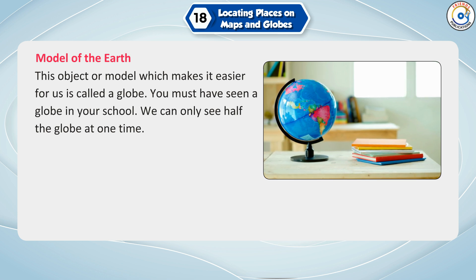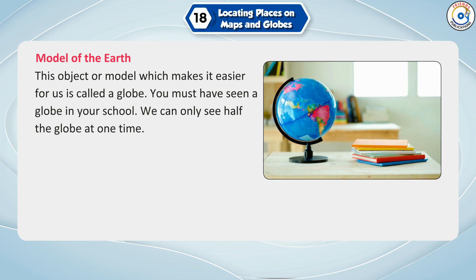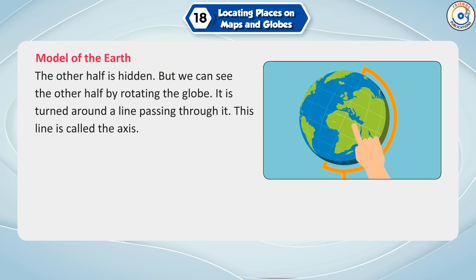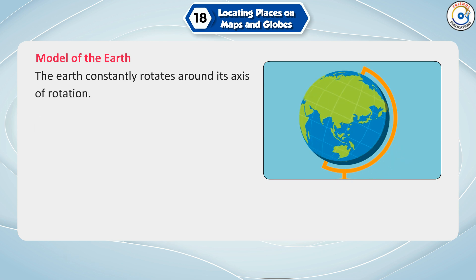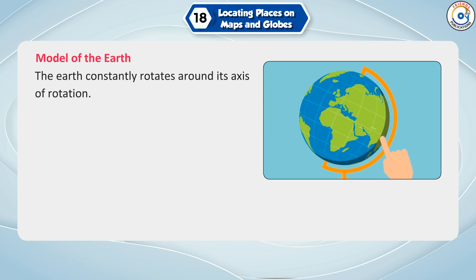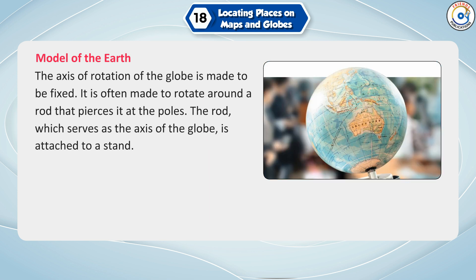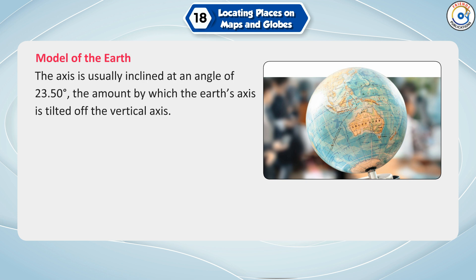We can only see half the globe at one time, but we can see the other half by rotating it. The globe is turned around a line passing through it called the axis. The Earth constantly rotates around its axis of rotation. The axis of the globe is often made to rotate around a rod that pierces it at the poles. The rod serving as the axis is attached to a stand and is usually inclined at an angle of 23.5 degrees — the amount by which the Earth's axis is tilted off the vertical axis.